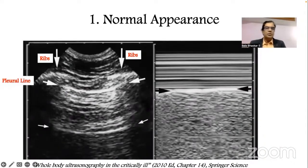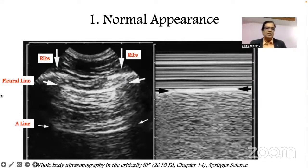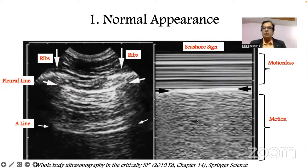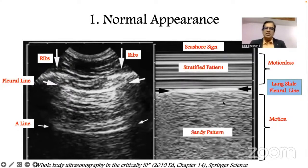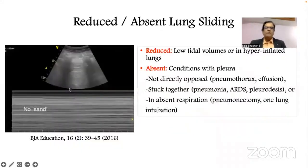When the ultrasound probe is placed on the chest, we encounter the upper and lower ribs, and below them the pleural line — mainly the parietal pleura — producing the bat sign: two ribs and the pleural line. This is a very well-known sign. In M-mode this gives the seashore sign: the upper subcutaneous tissue is motionless with a stratified pattern, and the lower lung tissue moves and slides over the pleural line, giving a sandy pattern — this is the lung sliding sign.